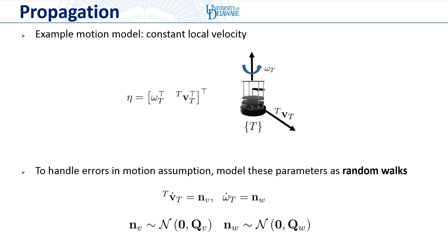An example of a motion model would be constant local velocity, where we say that the model parameters to be estimated are the velocity and angular velocity of the platform. In real-world scenarios, no target will actually truly follow this model exactly. As such, instead of modeling these parameters as static, we model them as random walks which are allowed to evolve in time. By controlling the noise characteristics of this random walk, we can control how closely we assume the target follows a given model — for very low noises, it closely follows the model, while for very large noises, these parameters are allowed to evolve rapidly and it does not closely follow the model.